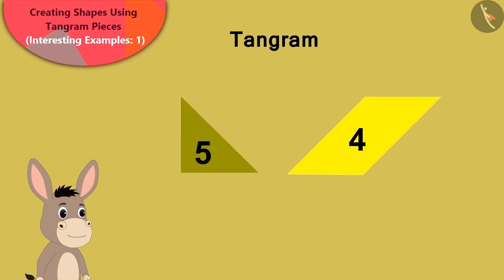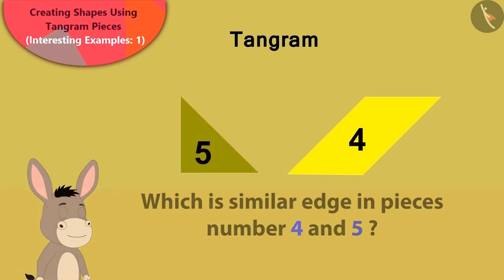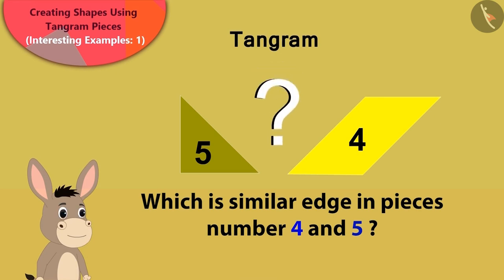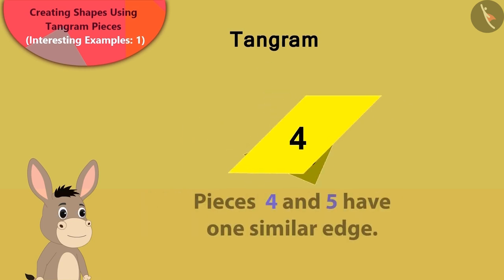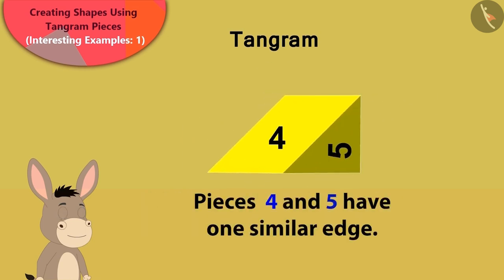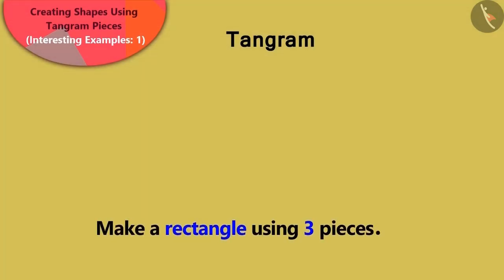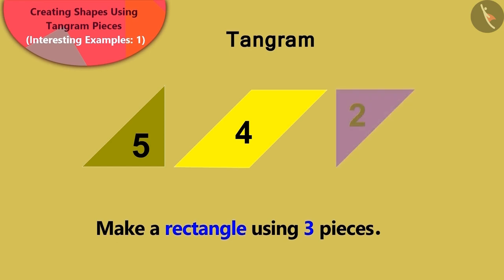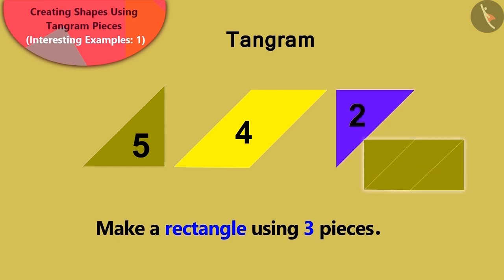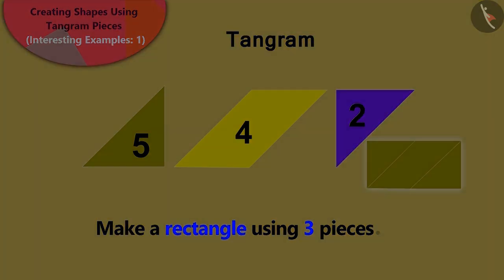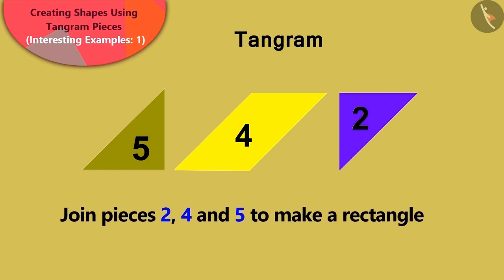Now Bula said that pieces number four and five have one similar edge. Children, can you recognize them? Yes, that answer is absolutely correct. Children, can you join three pieces of the tangram to make a rectangle like this?